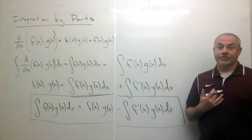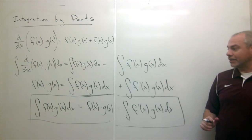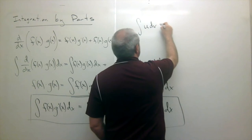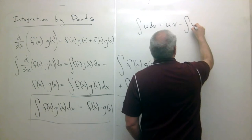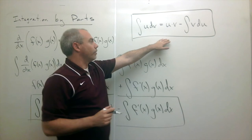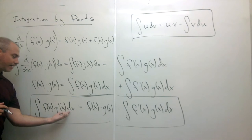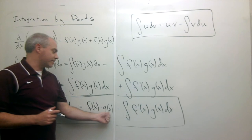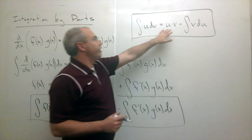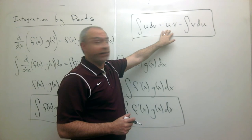There's another way I like to remember integration by parts that's more practical. The integral of u dv equals u times v minus the integral of v du. When I think about integration by parts, I use this formula. It's the same idea: the integral of a function times a derivative equals the first function times the second function minus the integral of the remaining derivative combined with a function.